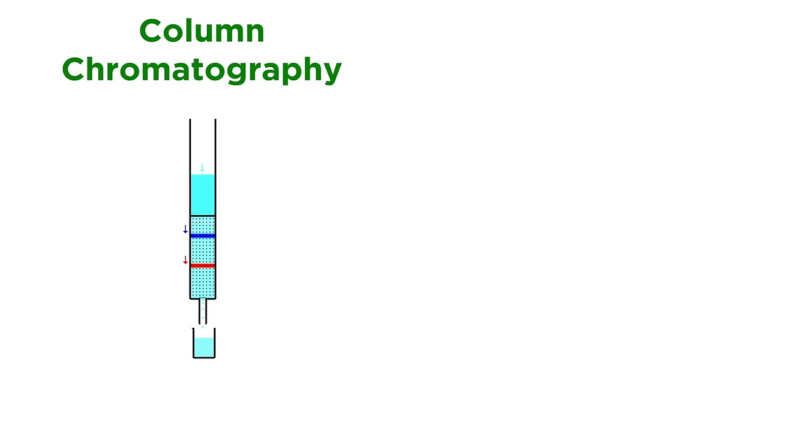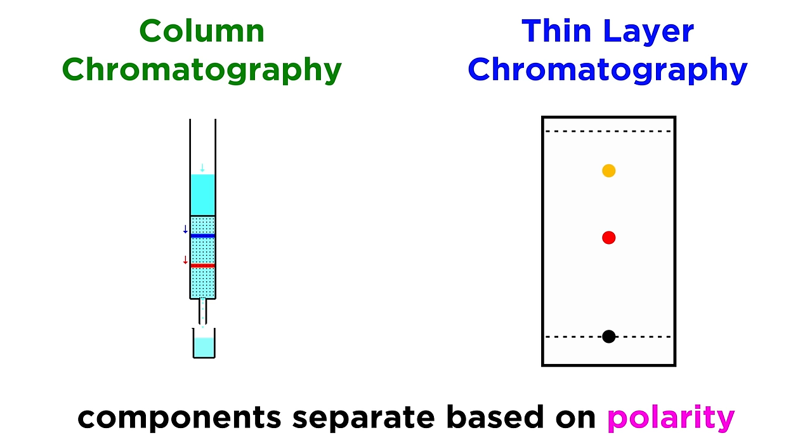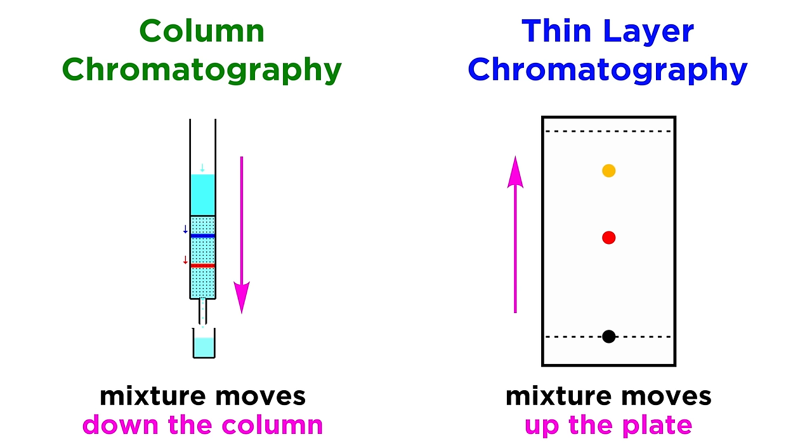The way we will do this is column chromatography. As we said, this works just like TLC, in that we will use a silica gel to act as a stationary phase, and then the components will separate as they move through the column based on how they interact with the hydroxyl groups in the gel. The only difference is that instead of moving up a plate, they move down the column.